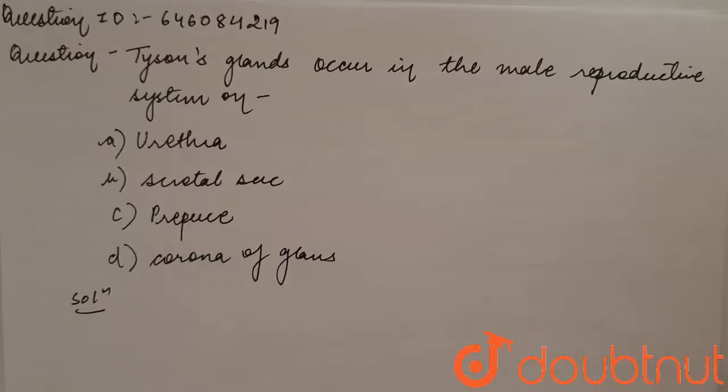So we have a question: Tyson's gland occurs in the male reproductive system on. The options are a) urethra, b) scrotal sac, c) prepuce, and d) corona of glans.